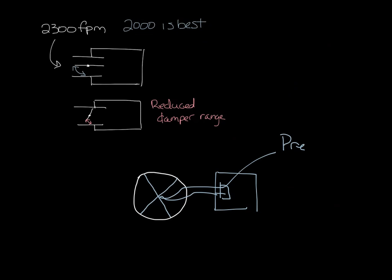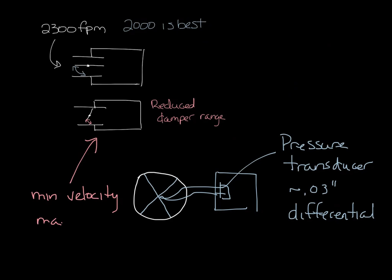And on that controller, you have a pressure transducer that is taking the pressure signal from your flow sensor. Most pressure transducers need about 0.03 inches of differential pressure from the flow sensor to control a box accurately. So in this case where your damper is oversized, your minimum velocity may result in a pressure reading from the flow sensor that is less than 0.03 inches. And then that means that your box will not be able to control as accurately at low flow.